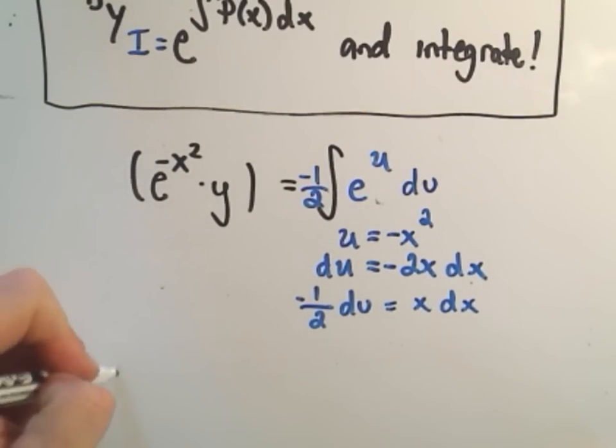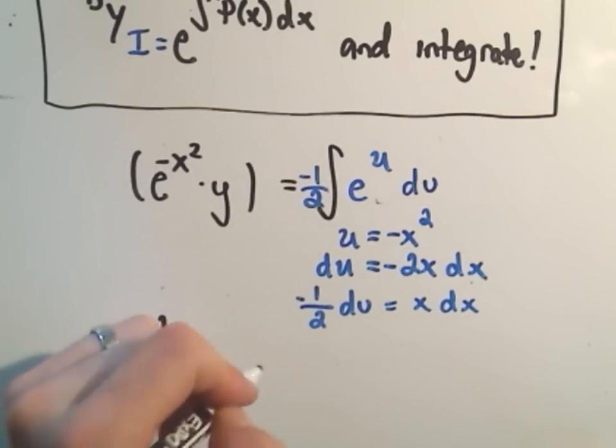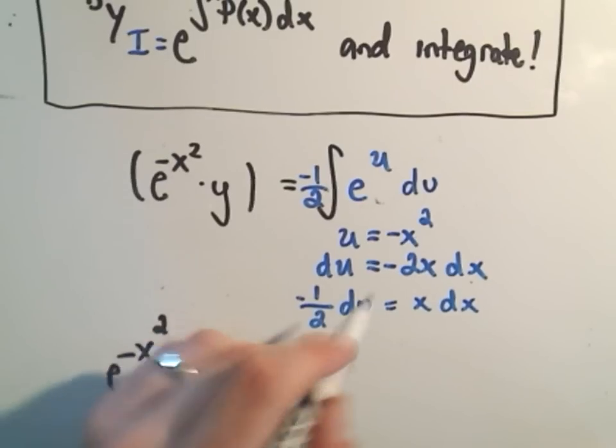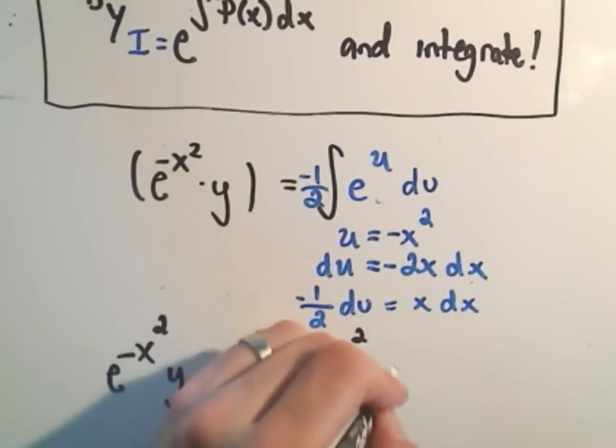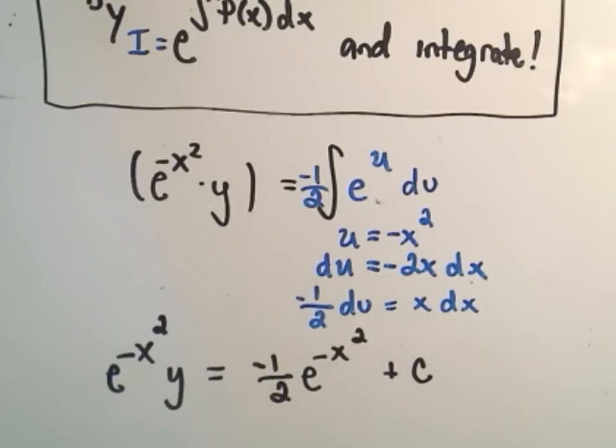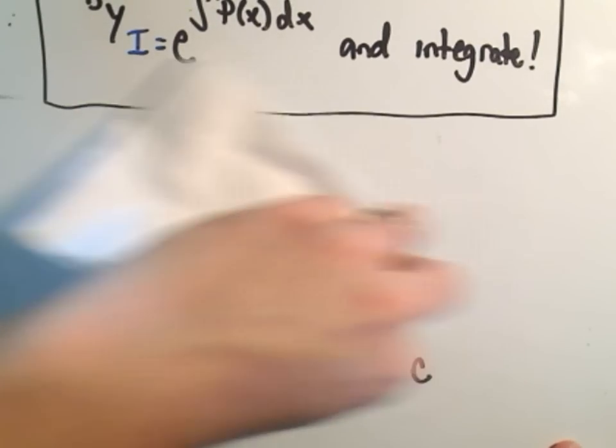So we're done with the left side. We've actually already integrated that side. On the right side, we'll get negative 1 half e to the u. But we know that u is negative x squared plus c. And at this point, technically, you've got your solution here. So you could always even go ahead and divide both sides, just to get your y term alone. So we can do that real quick.